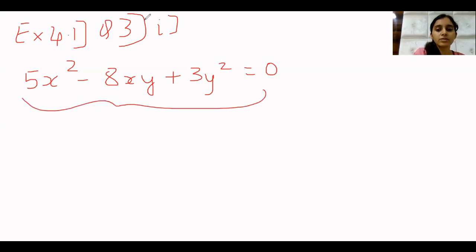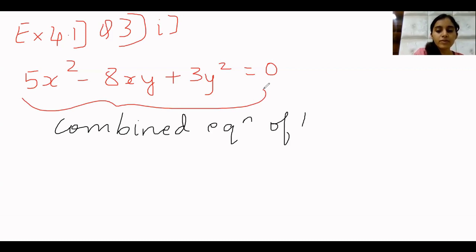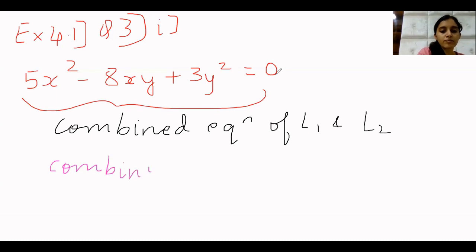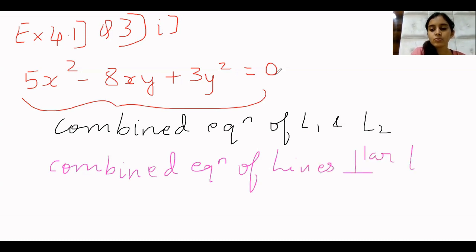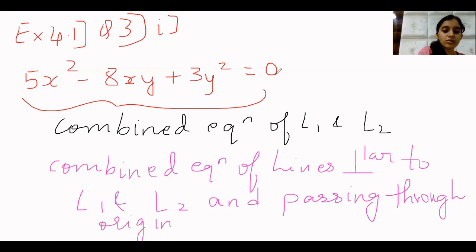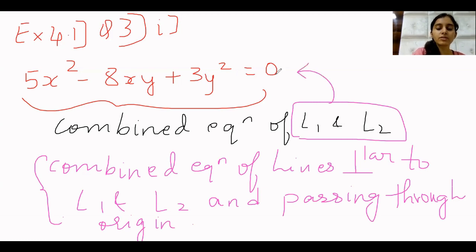This is a combined equation of two lines — let's say the combined equation of L1 and L2. Now we have to find the combined equation of lines perpendicular to L1 and L2 and passing through the origin. For that, the best part would be to know the slope of the two lines. We require the slope of L1 and L2, which we will get from this combined equation.